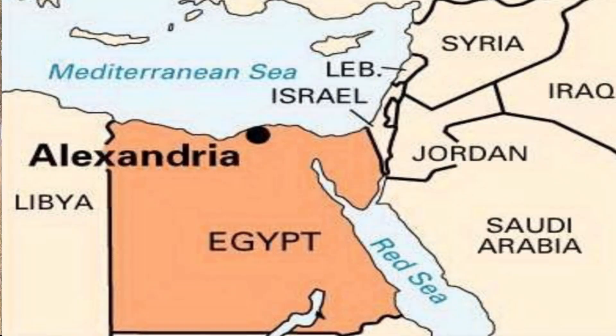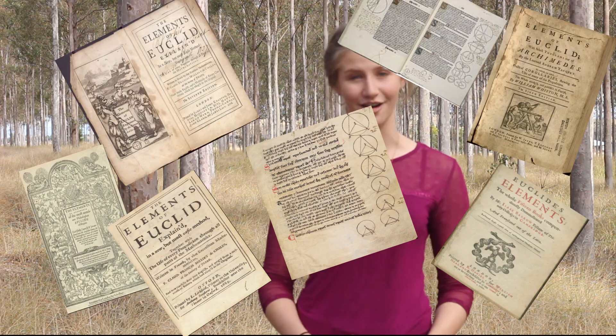Euclid was a Greek mathematician best known for his thesis on geometry, presented in a collection of 13 books called The Elements. Although little is known about his life, Greek philosopher Proclus, in his summary of famous Greek mathematicians, suggests that Euclid was born in 300 BCE and taught in Alexandria, Egypt, in the time of the Macedonian king Ptolemy Isota. Euclid was perhaps the most prominent mathematician of Greco-Roman antiquity, and his works are said to be the second most studied books after the Bible.